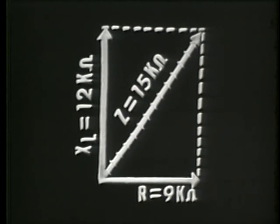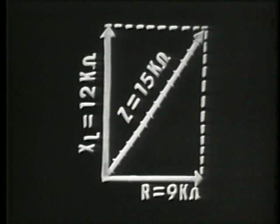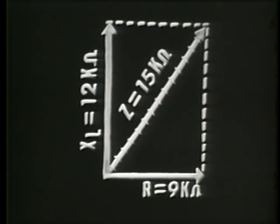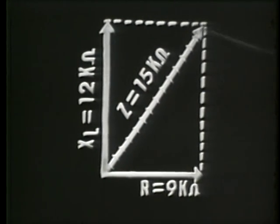We've constructed vectors and used an oscilloscope, but there is still one more method — a very accurate method — for obtaining values in a series RL circuit: understanding how trigonometry and associated mathematics can be used to solve for total impedance, phase angle, and so on. If we picture the original vectors — resistance R at 9 K ohms, X of L at 12 K ohms, and the resultant vector at 15 K ohms — we notice that the resultant vector Z actually divides our parallelogram into two right triangles.